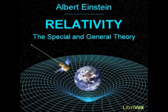We call the magnitude ds the distance apart of the two events or four-dimensional points. Thus, if we choose as time variable the imaginary variable square root of (minus 1) times ct, instead of the real quantity t, we can regard the space-time continuum, in accordance with the special theory of relativity, as a Euclidean four-dimensional continuum, a result which follows from the considerations of the preceding section. End of section 26.